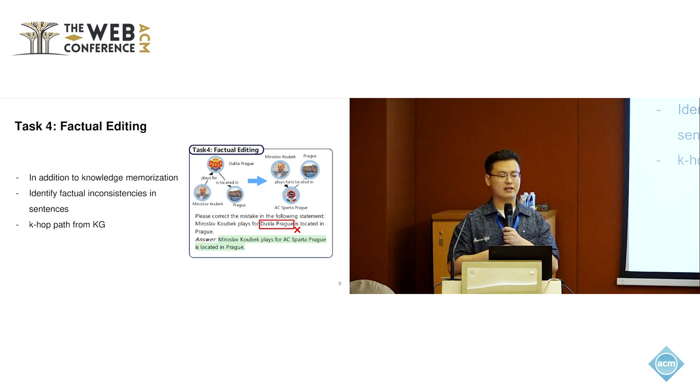Task four is factual editing. In addition to examining the knowledge memorization of large language models, we also want to test if a model can understand a multi-hop sentence and identify the factual inconsistency within it, and also make a correction. It's kind of like a combination of task one and task three. The model has to find out which part of the sentence is wrong and then retrieve the correct answer from its parametric knowledge. It's a step move from a single fact statement to a multiple factual statement.